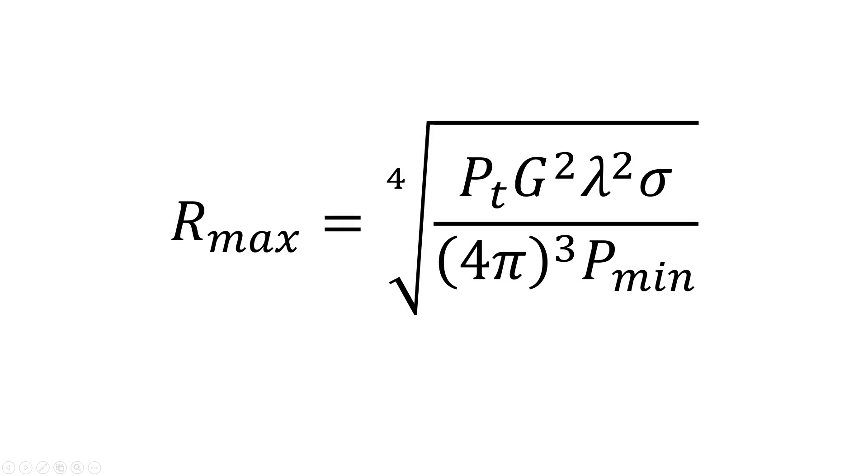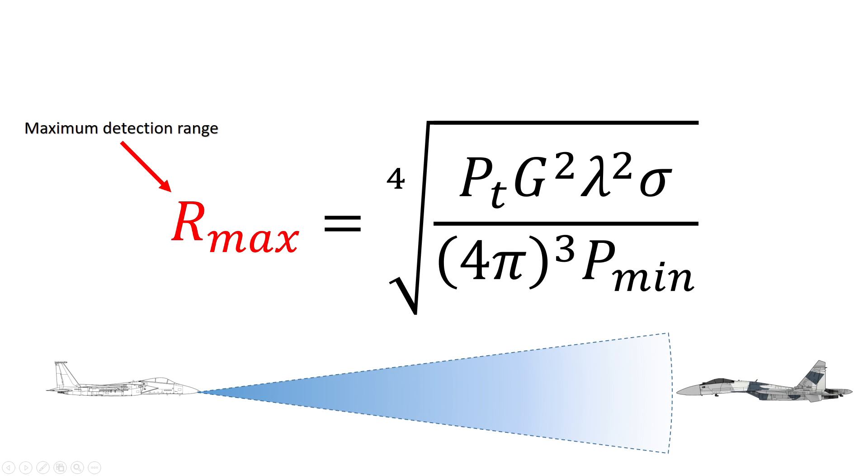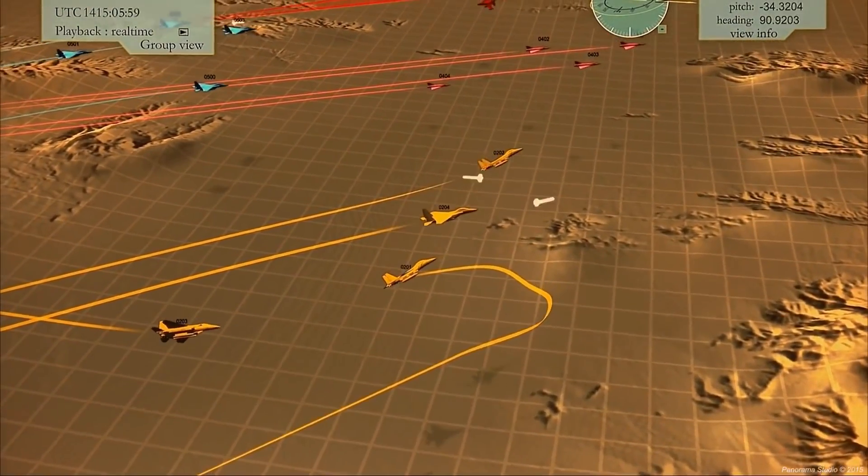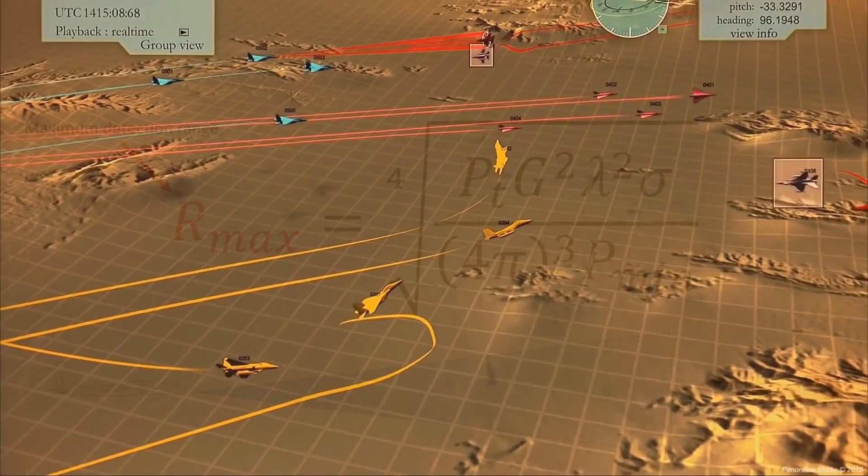This is the radar range equation. On the left side of the equation we have R_max which is our output and which tells us the maximum range that a radar can detect a target based on the variables on the other side of the equation.